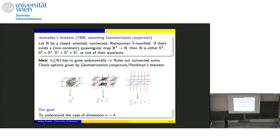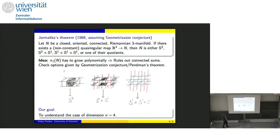So what is the goal of this talk? The goal is to understand the four-dimensional case. Why four-dimensional? In two dimensions the classification comes from uniformization; in three dimensions from geometrization and Perelman; and in dimension four there is a classification theorem for simply connected smooth manifolds coming from their intersection form — the Freedman theorem. That is one of the reasons why four.